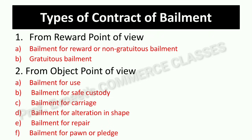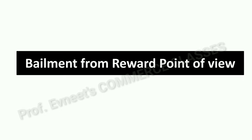Now let us look at the types of contract of bailment. From the reward point of view, the contract of bailment is of two types: non-gratuitous bailment and gratuitous bailment. From the object point of view, there are many types of bailment. We will discuss them one by one. First, let us look at bailment from the reward point of view.